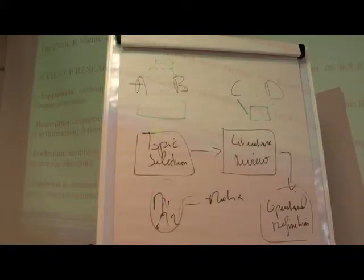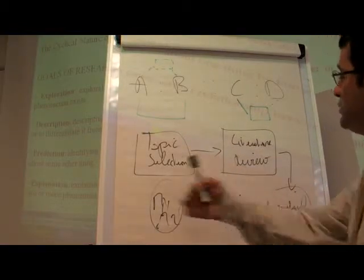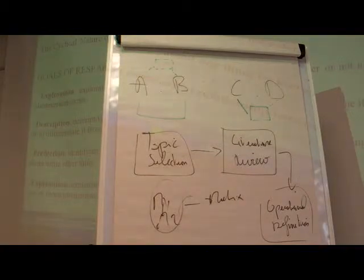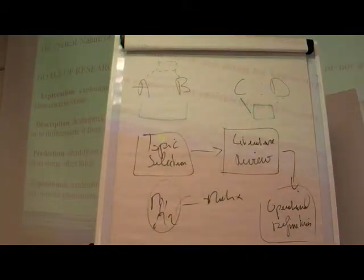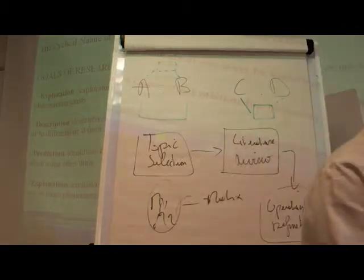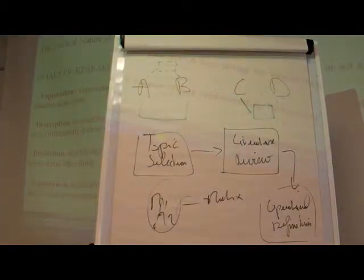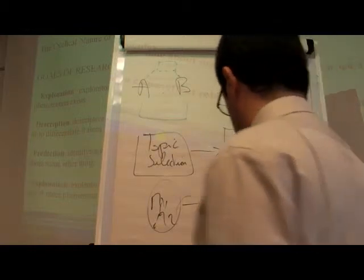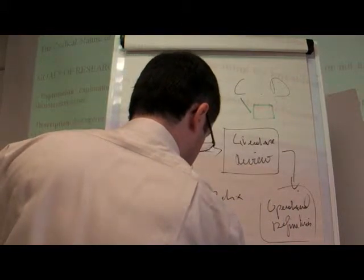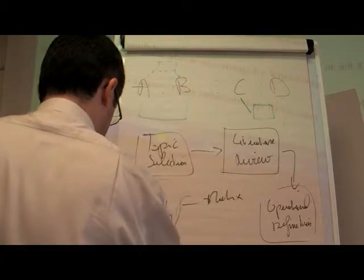Let me show you what I call the cyclical nature of the practice of research. We start with topic selection, literature review — I want to show you that this is something circular. It never ends. It's the wheel of research. From hypothesis, I get to data collection, then data collection and analysis, then data analysis.